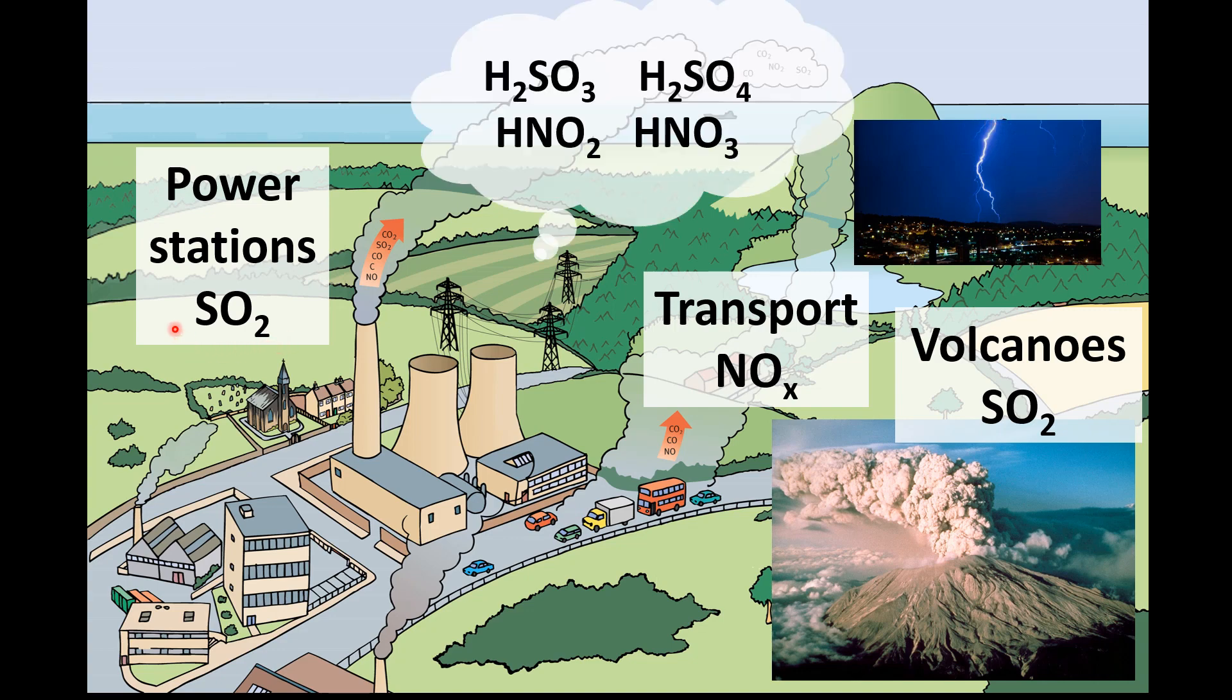The acidic gases produced, such as sulfur dioxide and the oxides of nitrogen, dissolve in water to form acids such as H2SO3 which is sulfurous acid, H2SO4 which is sulfuric acid, HNO2 which is nitrous acid, and HNO3 which is nitric acid.